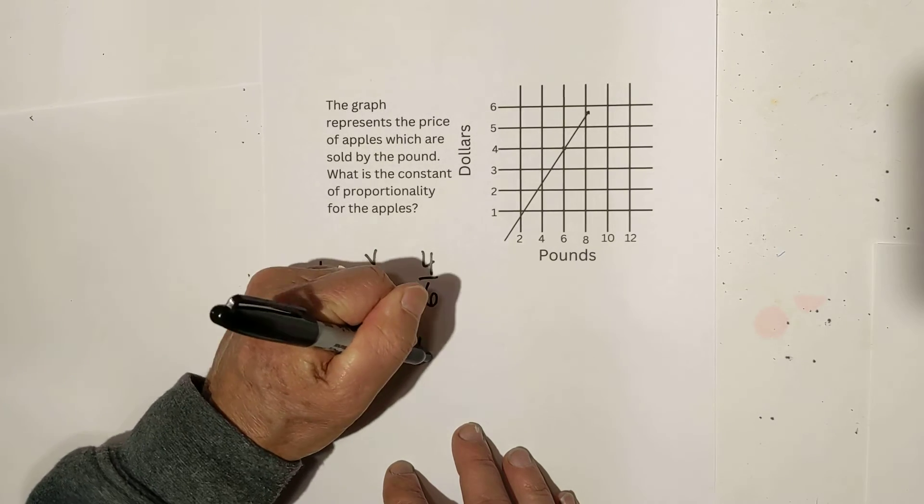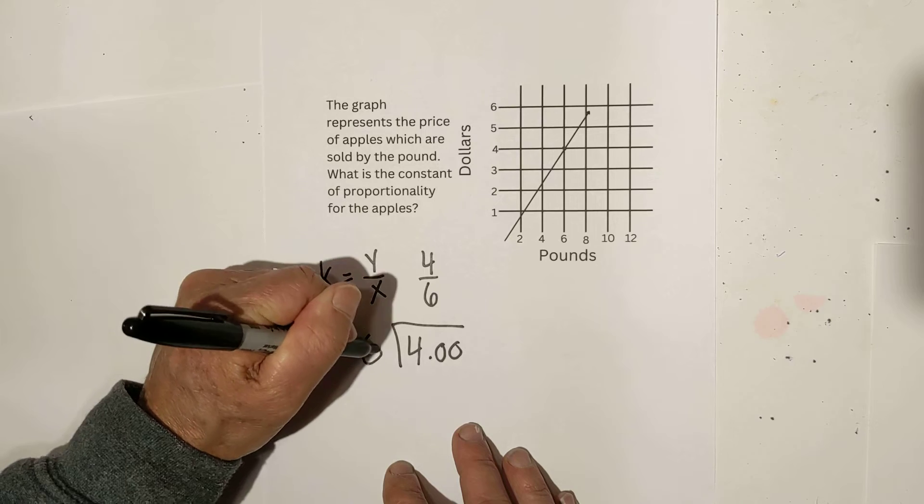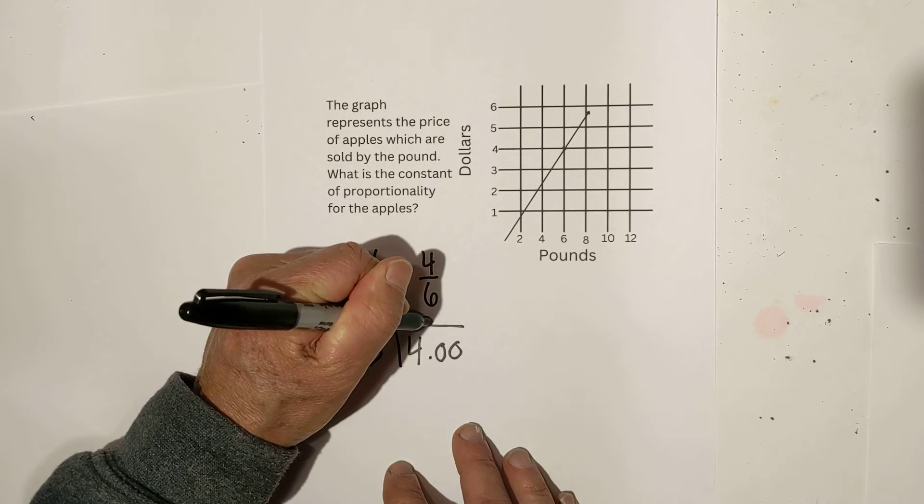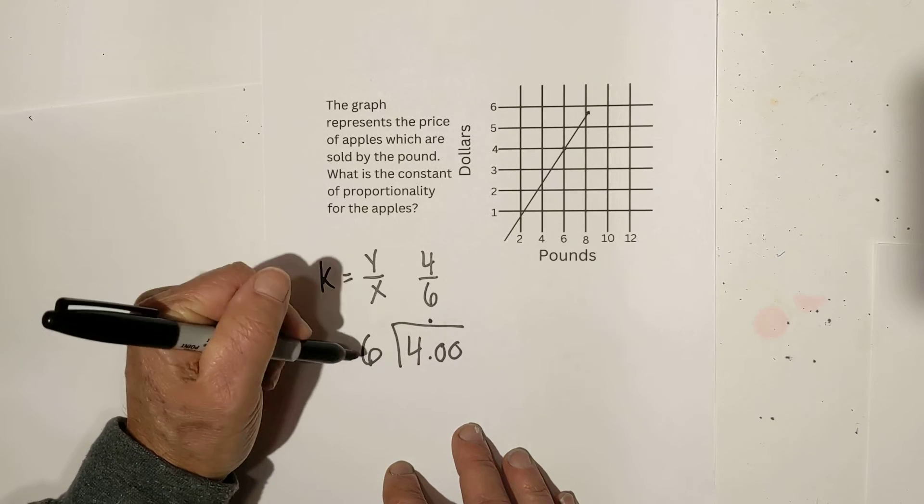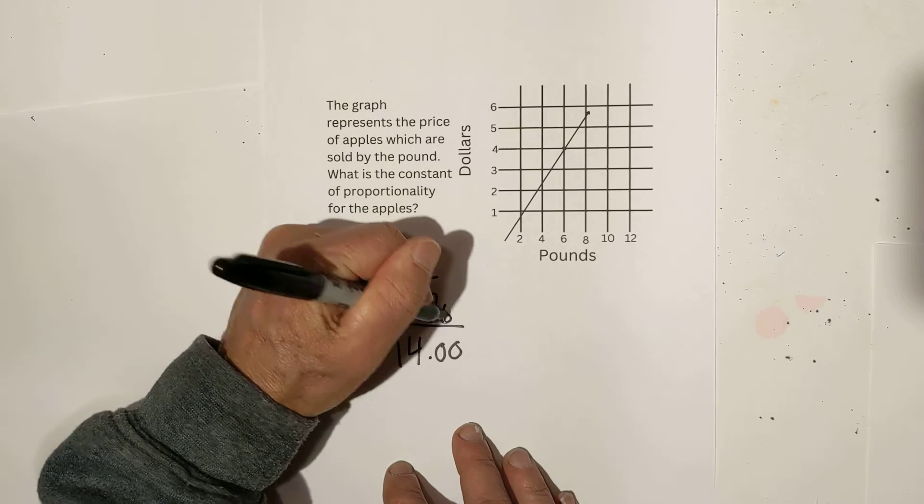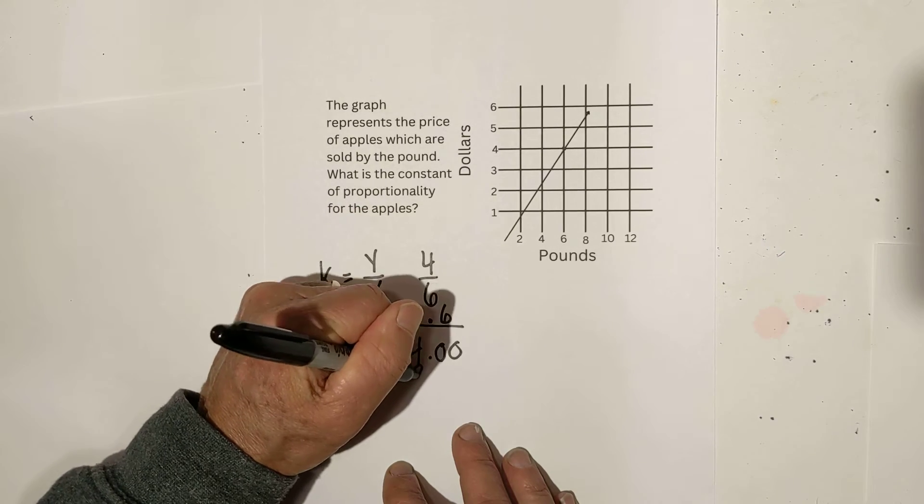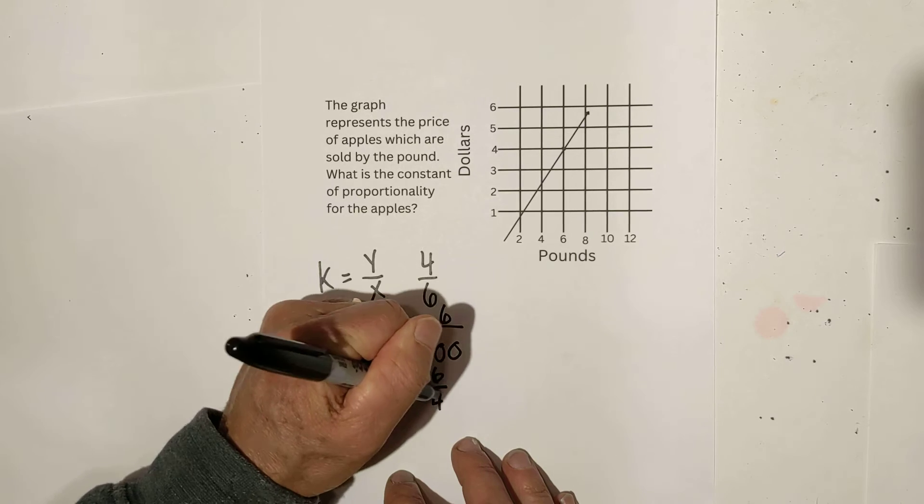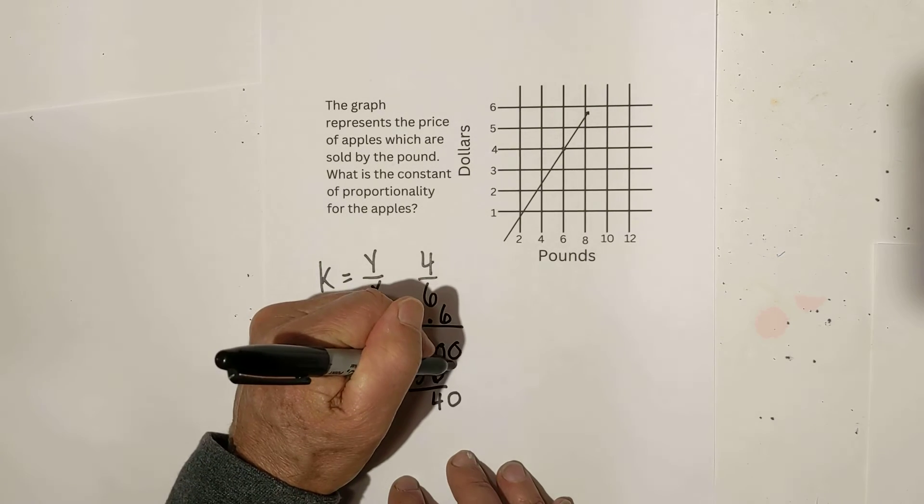Now I just take 4 divided by 6, bring up the decimal. 6 does not go into 4 but it goes into 4, 6 times. 6 times 6 is 36. Subtract. Bring down this 0.